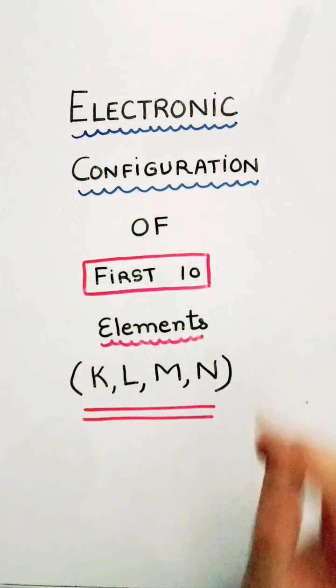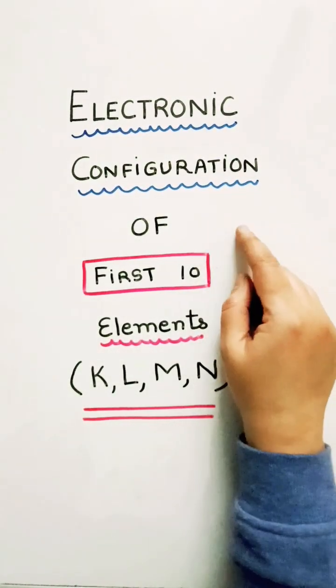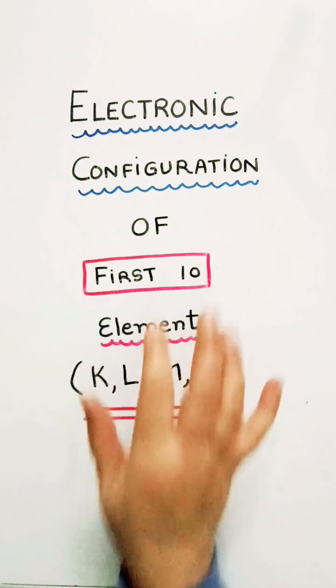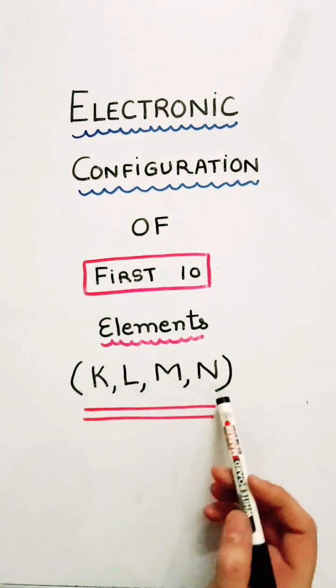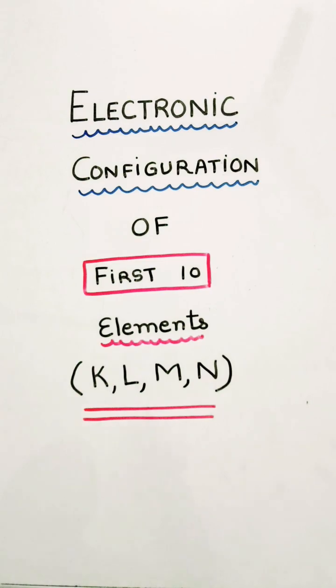Hello everyone. I am going to tell you electronic configuration of first 10 elements and the KLMN shell configuration. Let's do it.